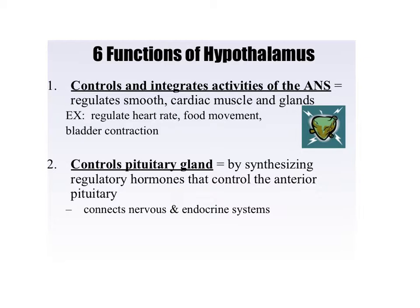Hopefully that riddle woke you up, because even if you've been sleeping through the first seven slides or so, this is what's most important. I can almost guarantee this will be a written question — probably asking you to give five functions of the hypothalamus. We're going to give you six. First: it controls and integrates activities of the autonomic nervous system — that's the sympathetic and parasympathetic nervous system — regulating smooth and cardiac muscle and glands, which help regulate your heart rate, the fight-or-flight response, food movement through your digestive system, and bladder contraction.